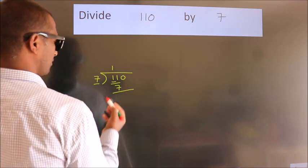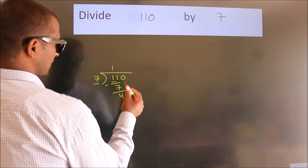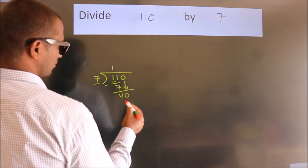Now we should subtract. We get 4. After this, bring down the beside number. So 0 down. So 40.